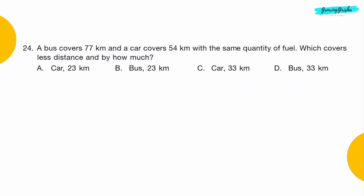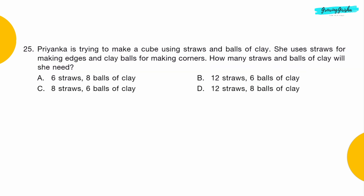Question 24: A bus covers 77 km and a car covers 54 km with the same quantity of fuel. Which covers less distance and by how much? Option A: Car by 23 km.